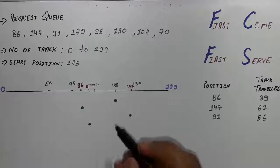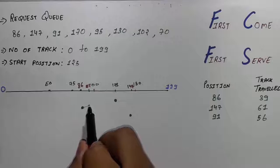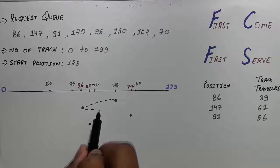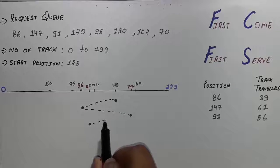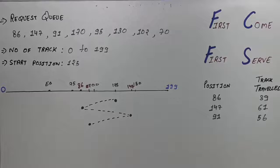So what you can do to remove confusion, you can draw lines between this. So draw lines like this so that we can know from where we have moved to where. And then we are currently on 91. Now we are on 91.